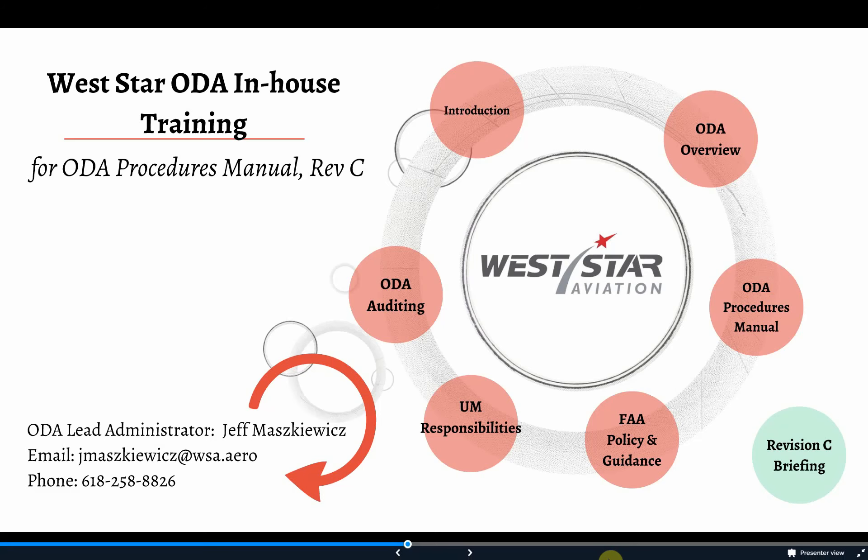Welcome to the FAA Policy and Guidance Module — everyone's favorite. The objectives of this module are to accomplish two things. One, make sure all unit members know where to find the most current published material that the FAA has provided. And two, discuss the need to follow the FAA's directives, orders, and policy and advisory material.